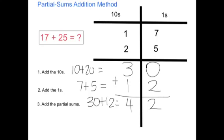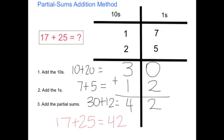So I have learned that 17 plus 25 is equal to 42, by adding the tens and the ones separately and then combining them together to get 42. And that has been the partial sums addition method.